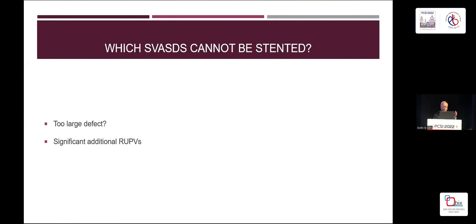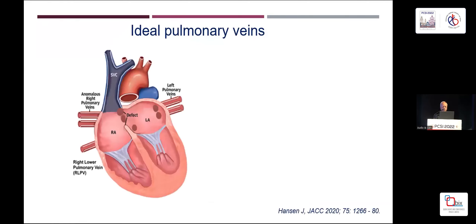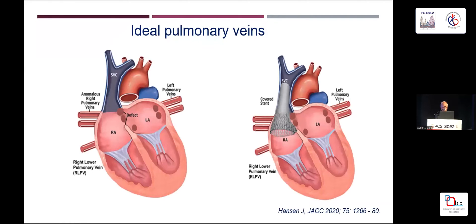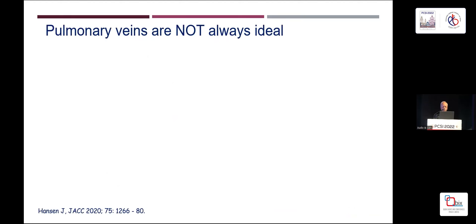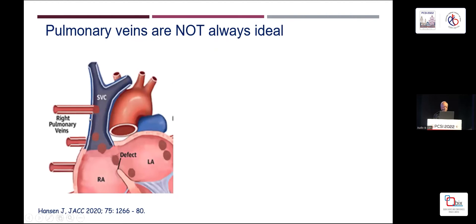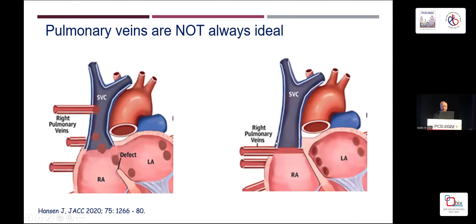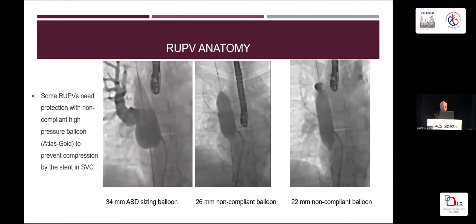Which cases can you not stent? When the defect is too large — there are very occasional ones that are three centimetres long — you would need 10 to 11 centimetre long stents, which is one to avoid. Also when there are significant additional upper pulmonary veins beyond the normal position ones: those pulmonary veins cannot be diverted towards the left atrium, so we refer those patients to the surgeons. And if the right upper pulmonary vein drains to the lateral side of the SVC, it is likely to be compressed and therefore unsuitable.